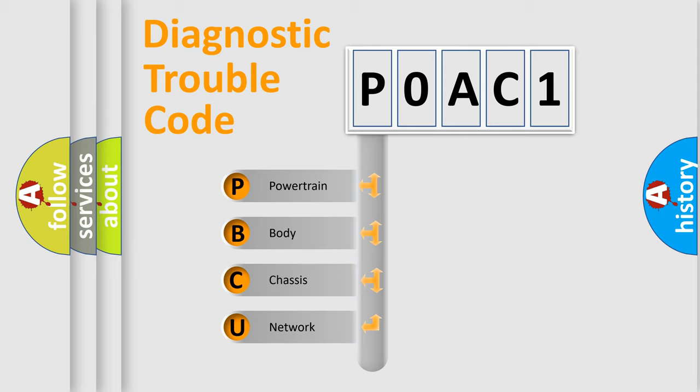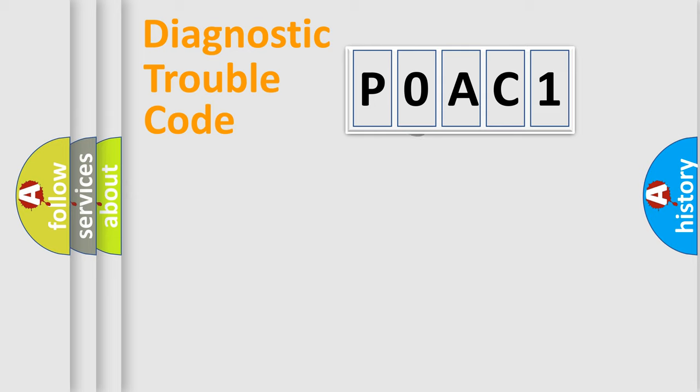We divide the electric system of automobiles into four basic units: Powertrain, Body, Chassis, and Network. This distribution is defined in the first character code.